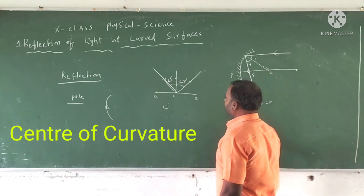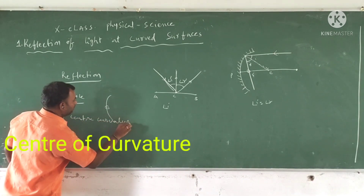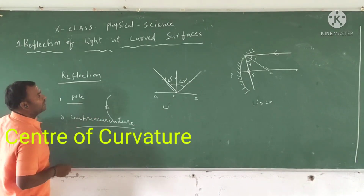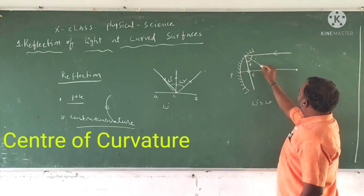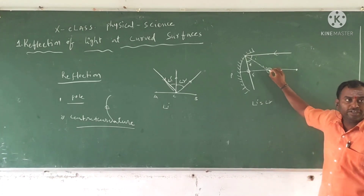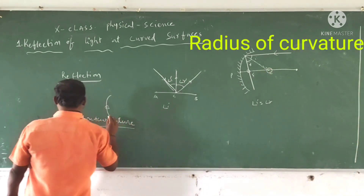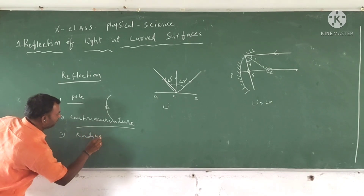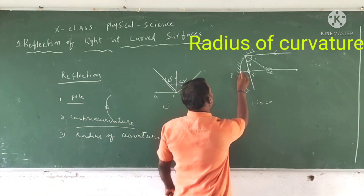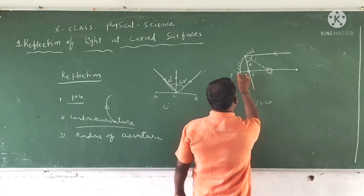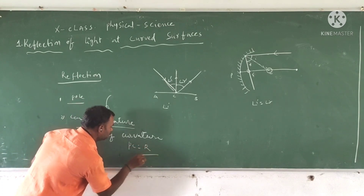So what is the center of curvature? Center of curvature means all the normals drawn to the curved surface converge at a point — that point is called center of curvature. So what is the radius of curvature? Radius of curvature means the distance between the pole P and the center of curvature C is called radius of curvature. P to C equals R.